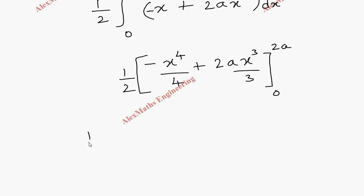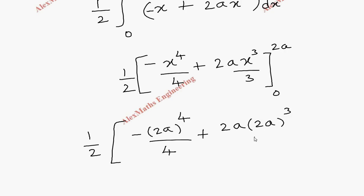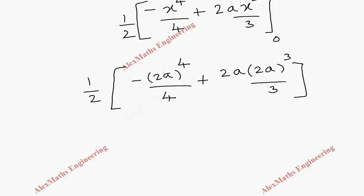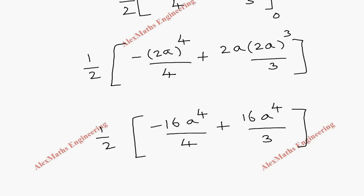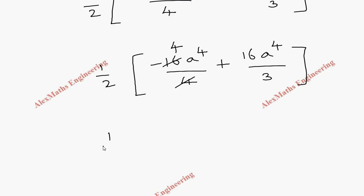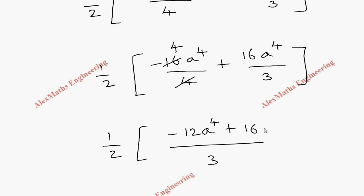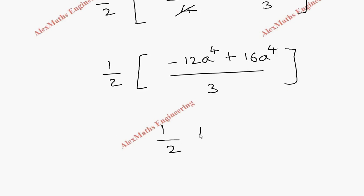Integrating: 2a times x cubed over 3 minus x to the fourth over 4, evaluated from 0 to 2a, with a half outside. Substituting 2a: 2a times (2a) cubed over 3 minus (2a) to the fourth over 4 equals 2a times 8a cubed over 3 minus 16a to the fourth over 4. This gives 16a to the fourth over 3 minus 4a to the fourth. Taking LCM of 3: (16a to the fourth minus 12a to the fourth) over 3 equals 4a to the fourth over 3. After multiplying by the half outside, the final answer is 2a to the fourth over 3.